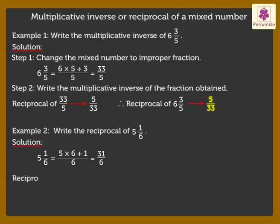The Multiplicative Inverse of 31 upon 6 is 6 upon 31. Thus, the Reciprocal of 5 and 1 upon 6 is 6 upon 31, which is the answer.